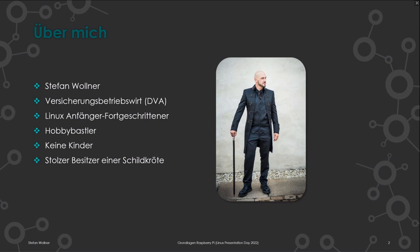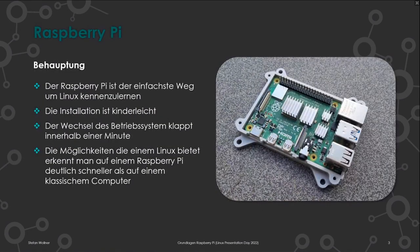Der Raspberry Pi ist für mich tatsächlich der einfachste Weg, um Linux kennenzulernen. Die Installation ist im Verhältnis zu einer Installation am Rechner sogar kinderleicht – also wer schon mal eine SD-Karte benutzt hat, der wird das definitiv auch hinbekommen, anders als es mit Partitionierungen von Festplatten vielleicht der Fall ist. Der Wechsel des Betriebssystems auf dem Raspberry Pi ist innerhalb von einer Minute möglich.